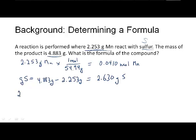That equals 2.630 grams of sulfur. Then we can take the 2.63 grams of sulfur and figure out how many moles it is. We use its molar mass, one mole of sulfur over 32.07 grams from the periodic table. Grams cancels, and that gives us 0.0820 moles of sulfur.